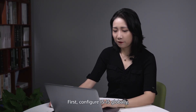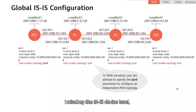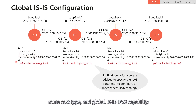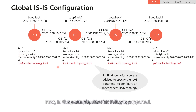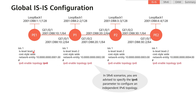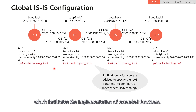First, configure IS-IS globally, including the IS-IS device level, route cost type, and global IS-IS IPv6 capability. In this example, SRV6TE policy is supported, so we need to set the cost type of IS-IS routes to wide, which facilitates the implementation of extended functions.